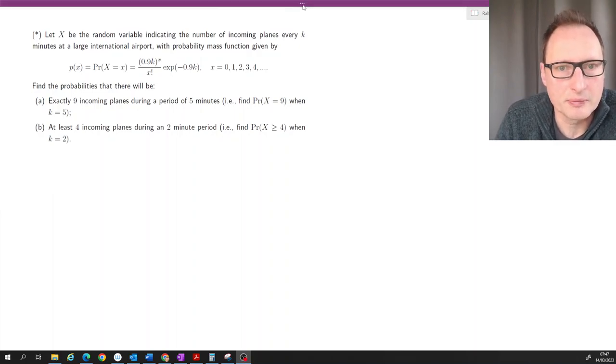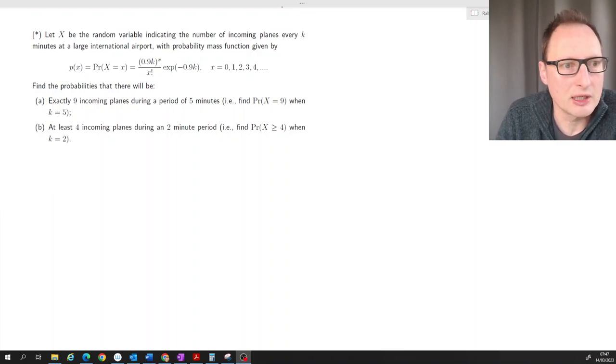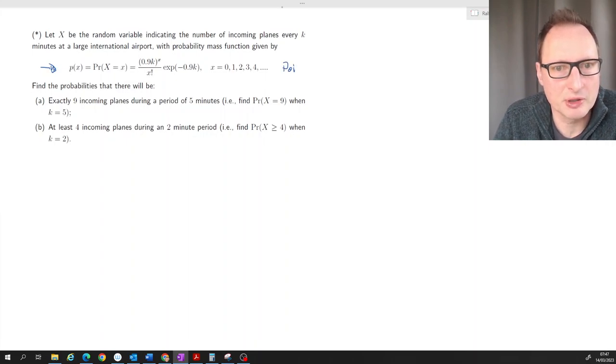So in this question you're being asked to calculate some probabilities using this probability mass function. This comes from a Poisson distribution.